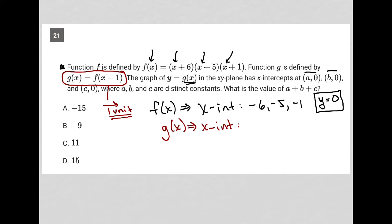So if I shift -6 to the right 1 unit, I'm at -5. From -5, I'd be at -4. And -1, I'd be at 0. So those are my x-intercepts for g(x).